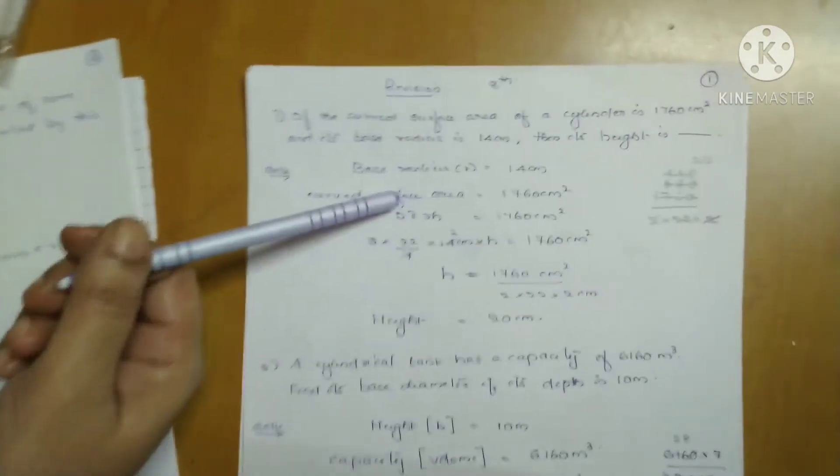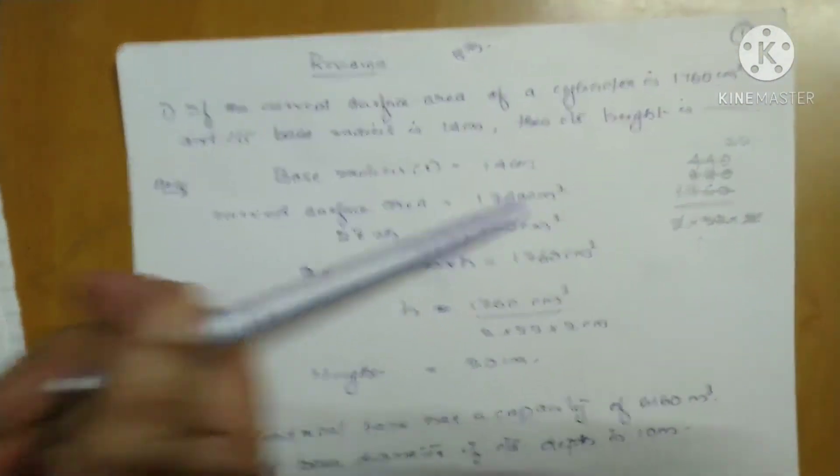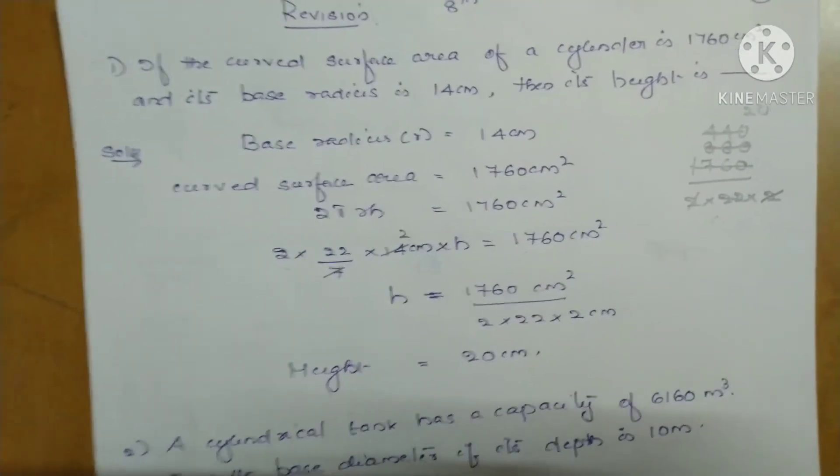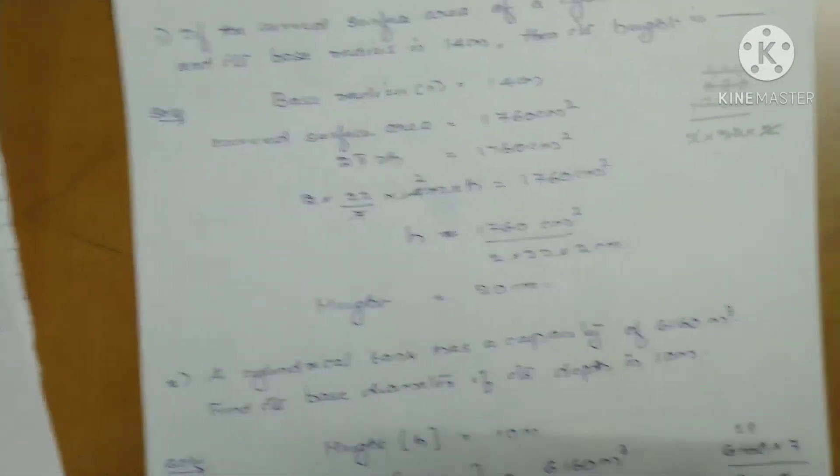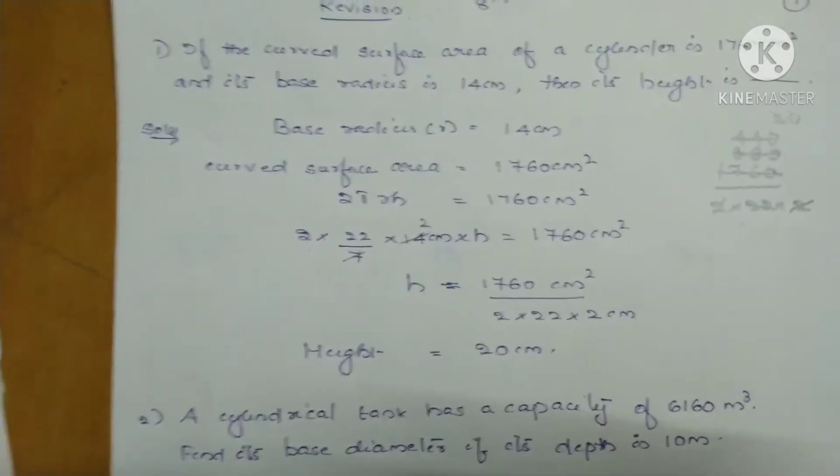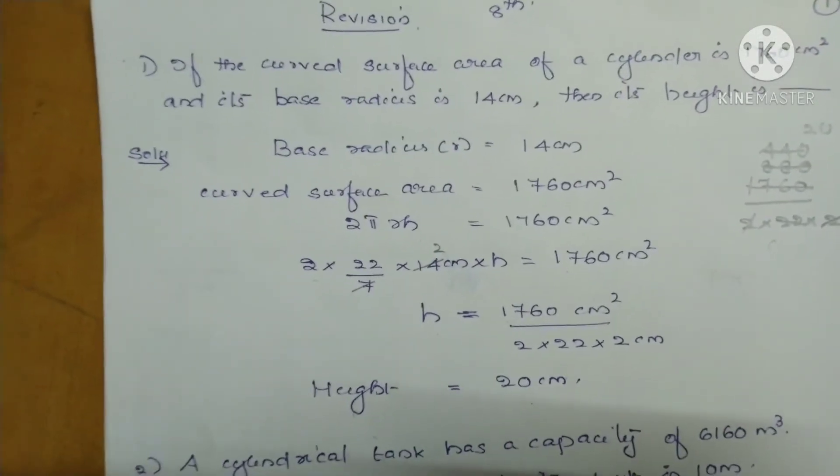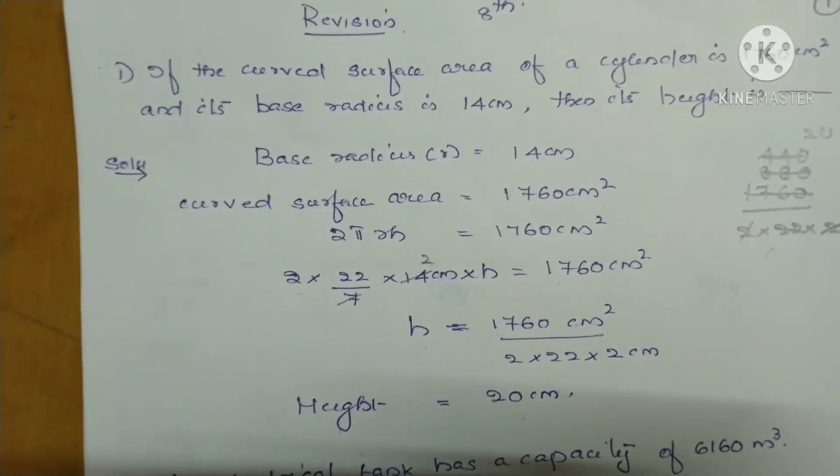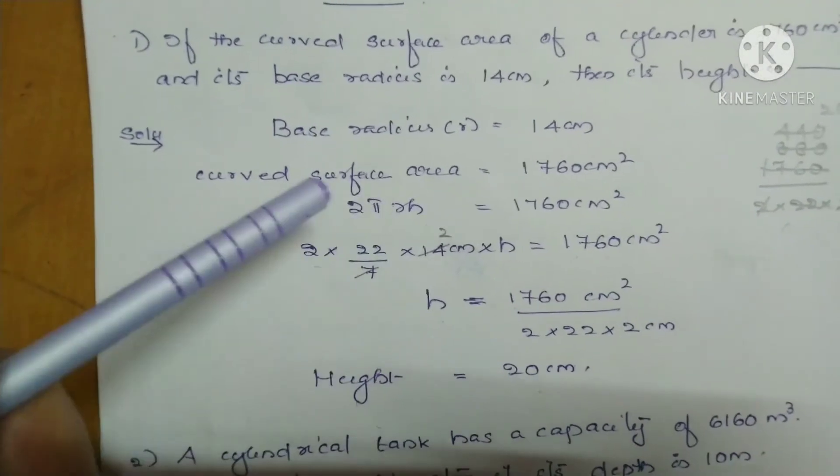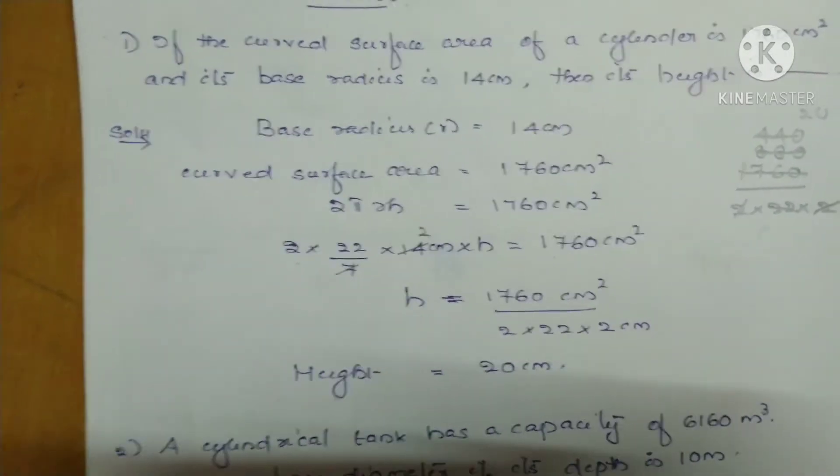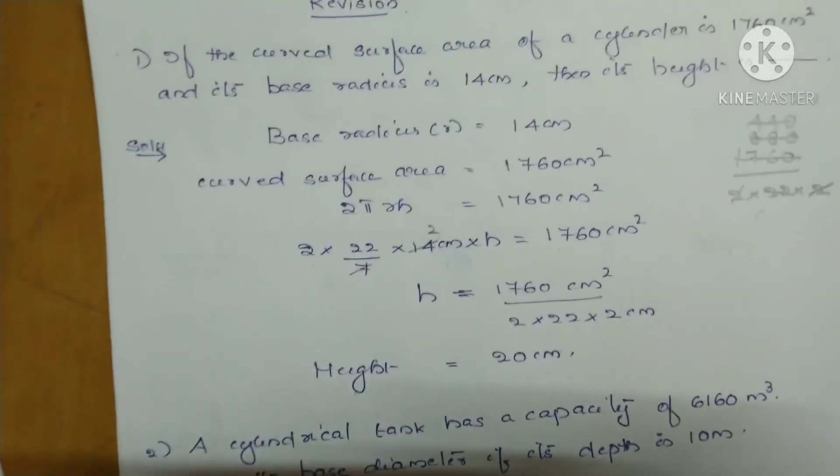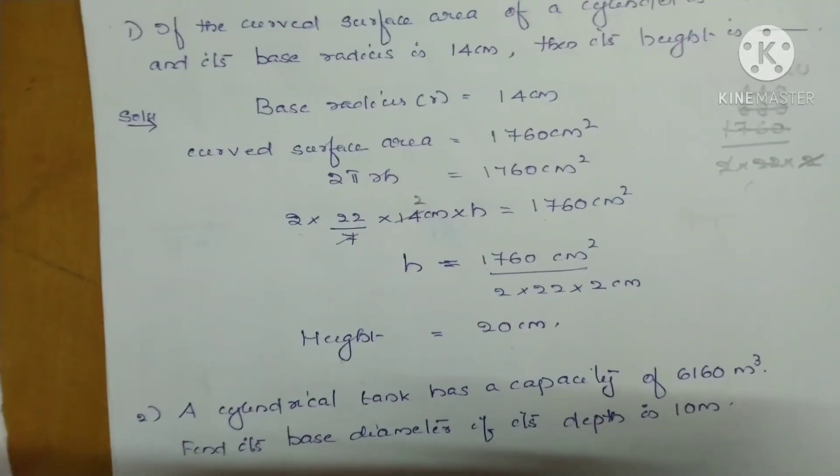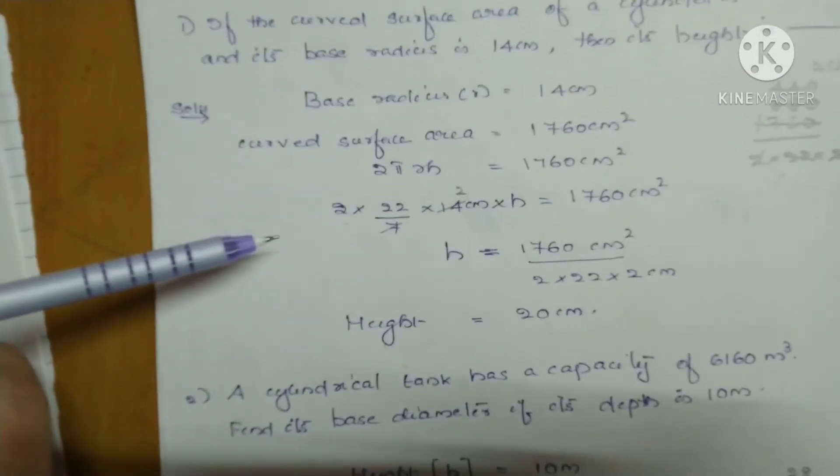Then we can write curved surface area is given 1760 cm². Whenever area, volume, perimeter, then you have to substitute the formula. Curved surface area is 1760, that means 2πRH. That is the formula for finding the curved surface area of a cylinder.